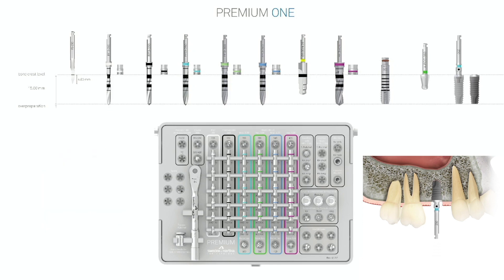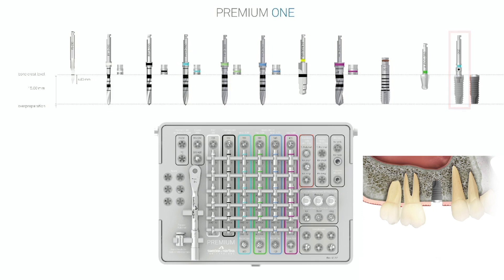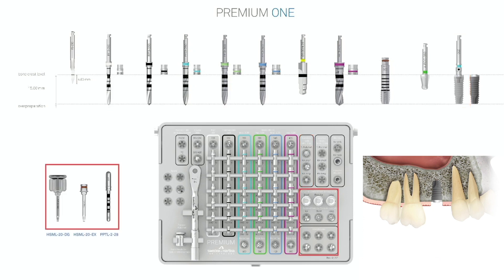We are now ready for implant placement, using the insertion tools called Easy Inserts. There are three of them — two corresponding to the motor handpiece and one for the torque wrench ratchet. The kit is also equipped with extenders, drivers, parallel pins, and multiple different tools that can help you complete surgery very easily.